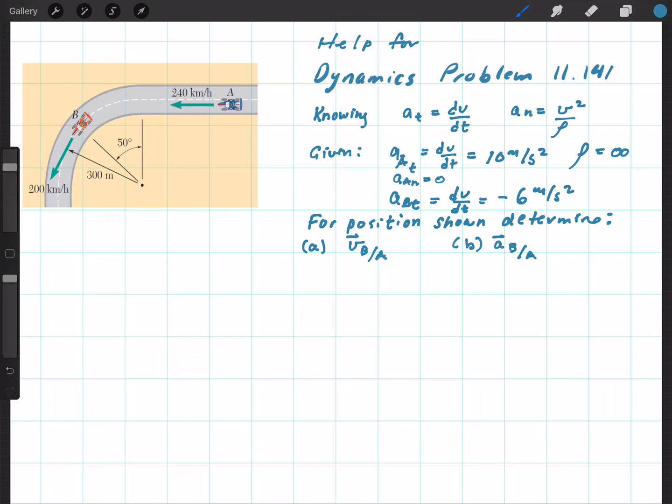But that's not true of the normal acceleration of car B because the radius for this one is 300 meters.